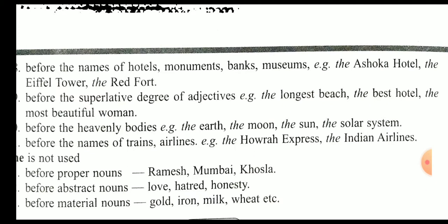Before the heavenly body - heavenly body जैसे earth, moon, sun, जो solar system है उसके साथ भी हम 'the' use करते हैं। क्योंकि जब हम sentence बोलेंगे तो mainly इसी के बारे में बात कर रहेंगे, main focus इसी पर है। Before the name of train और airlines के साथ भी हम 'the' use करते हैं।